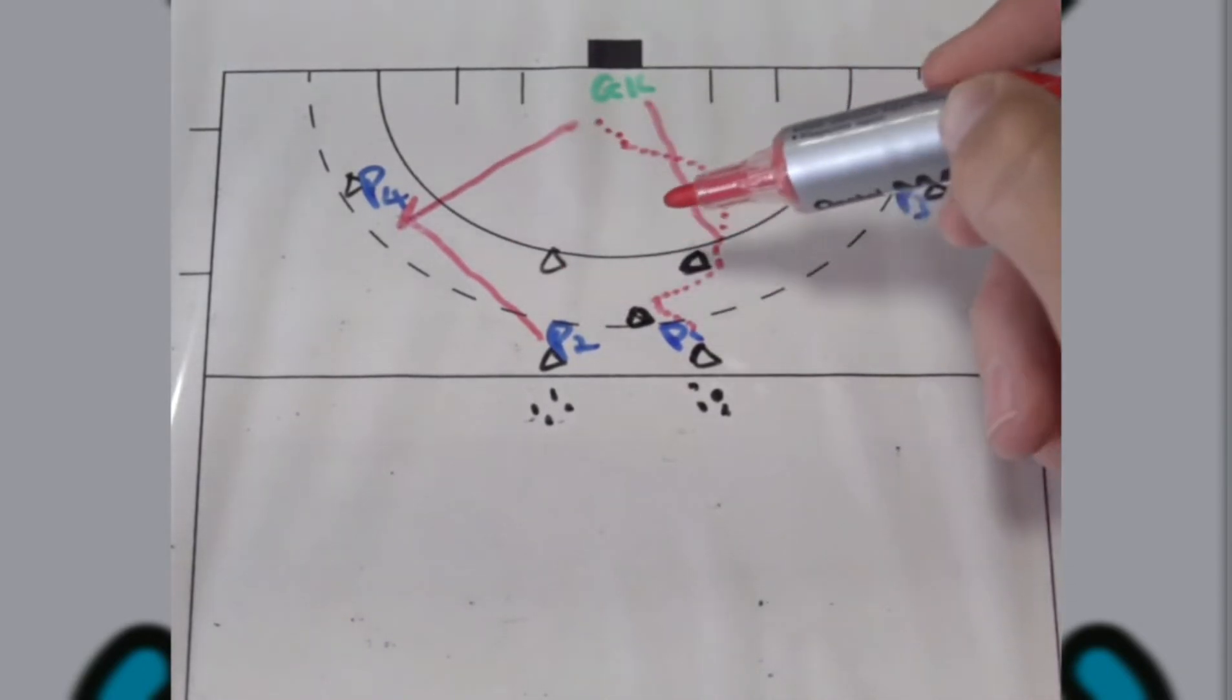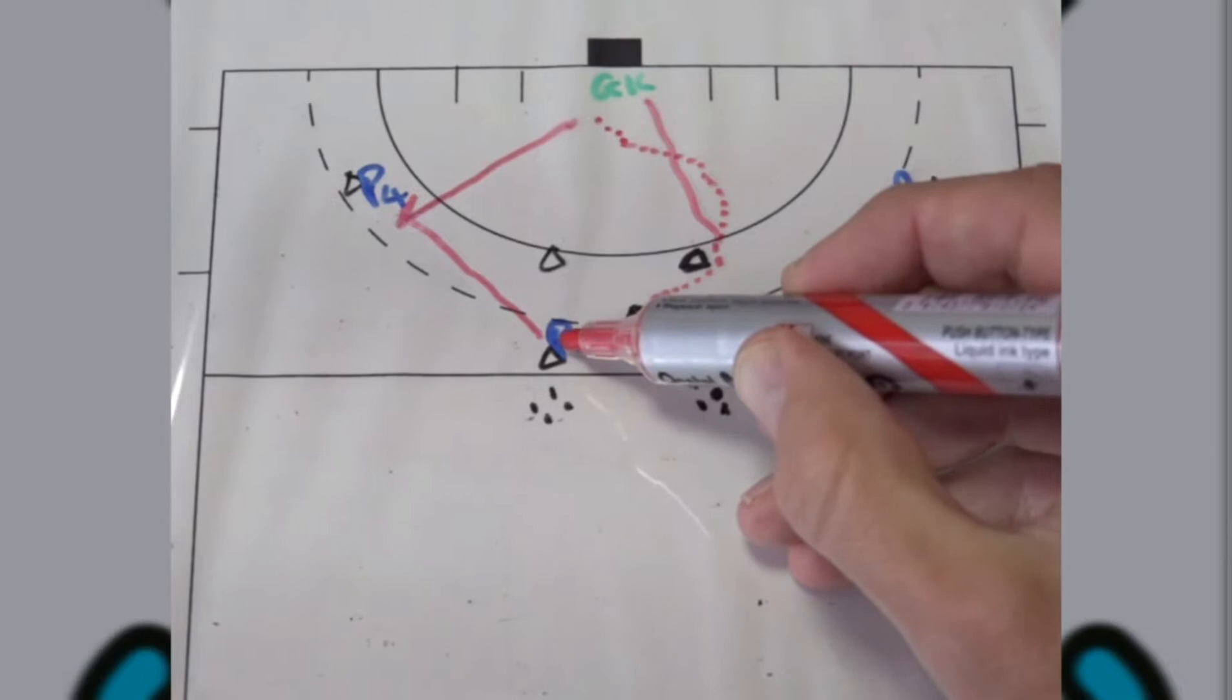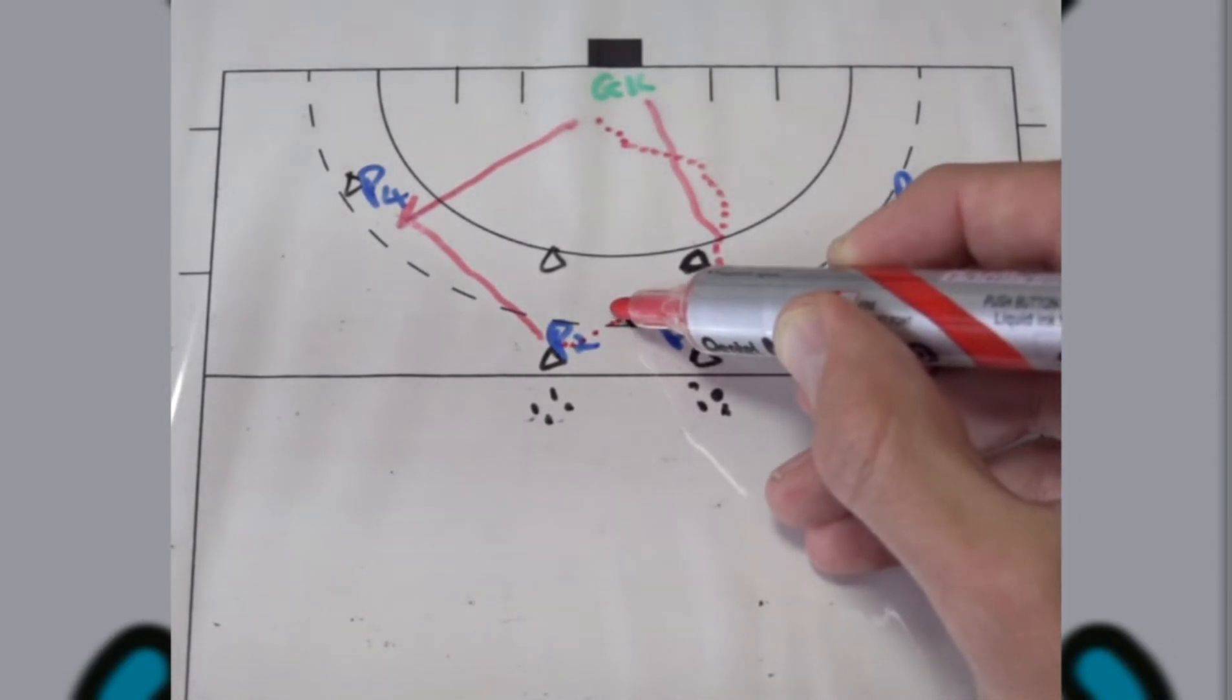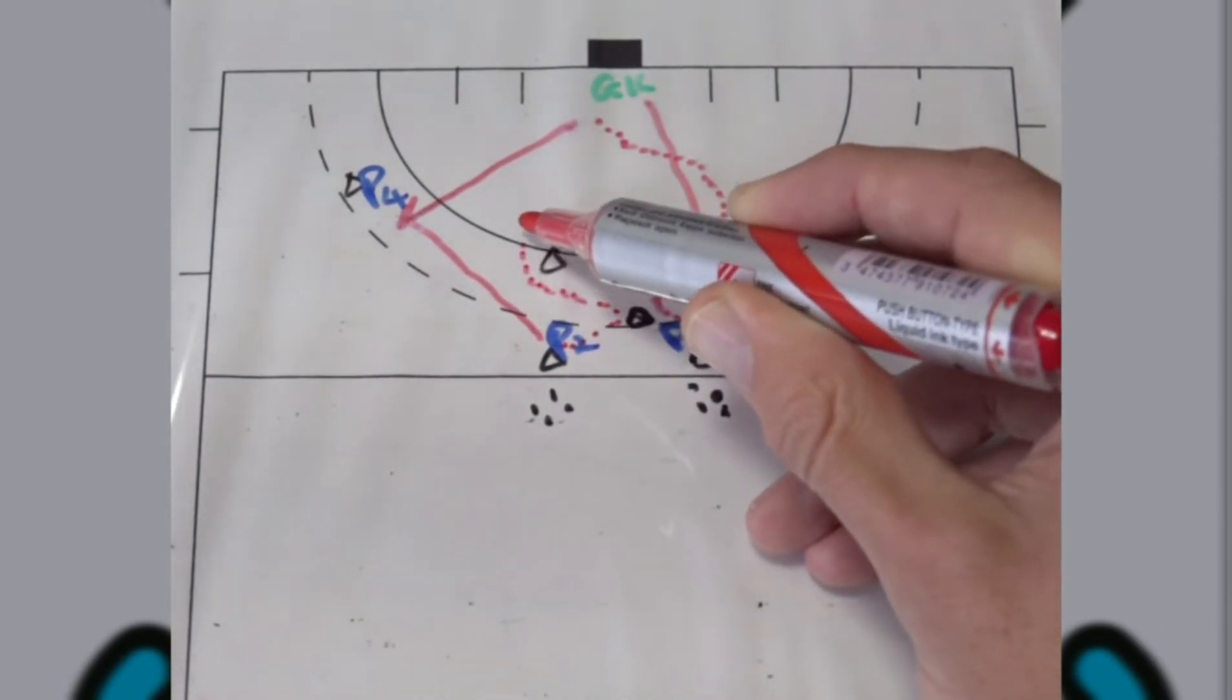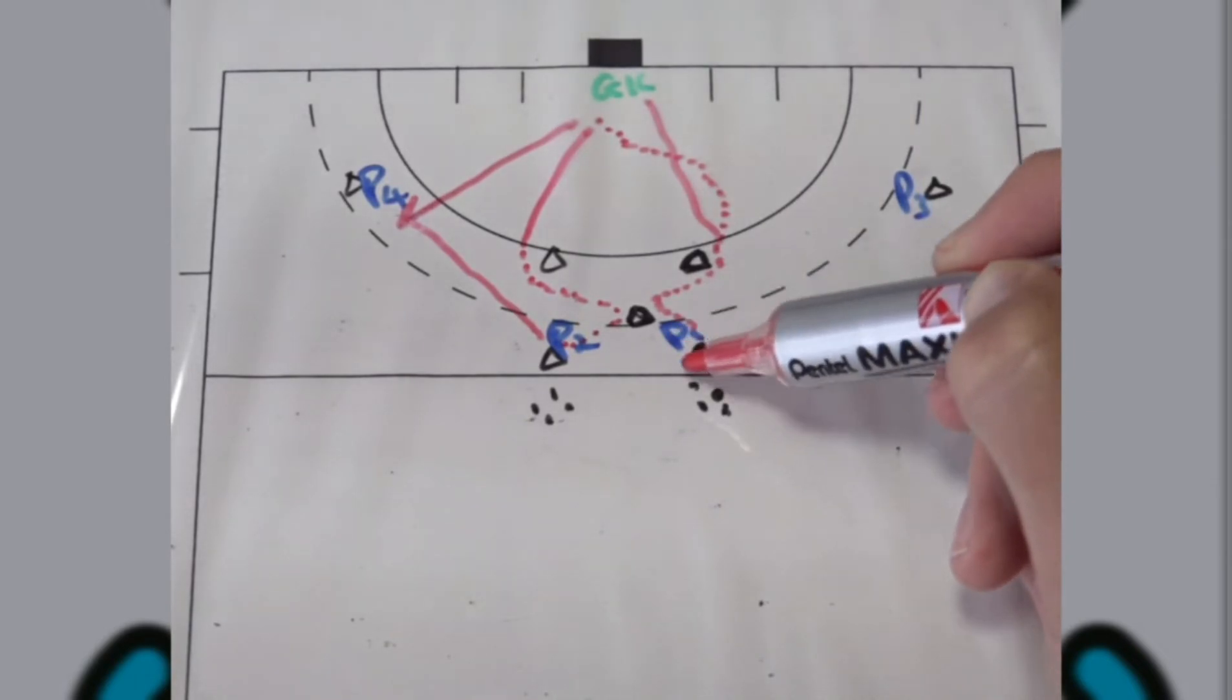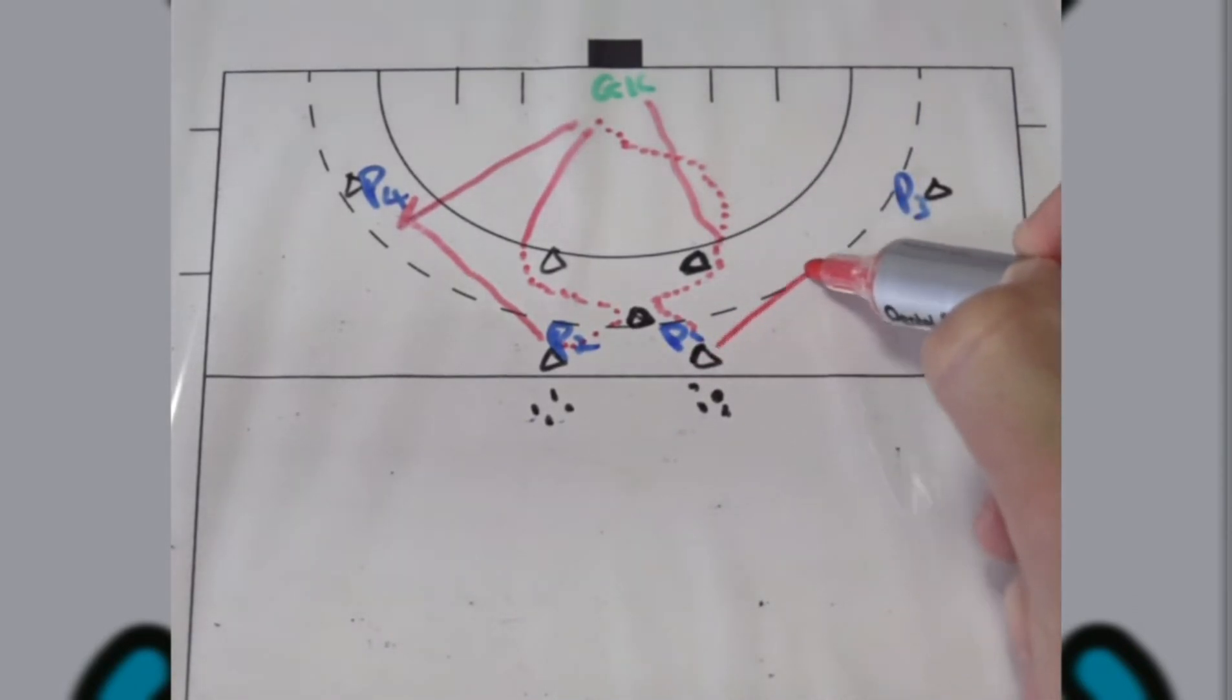As soon as that is done, player two will then run in inward and then outward as quick as they can and then take a shot. As soon as they take a shot, the next player that will start over here will pass the ball to player three.